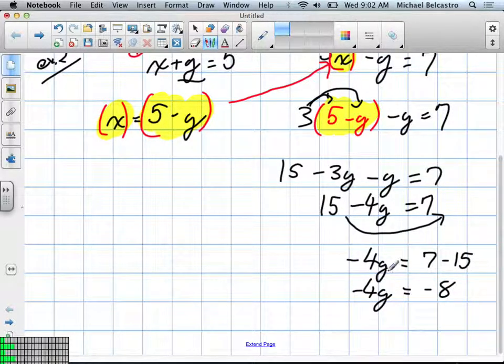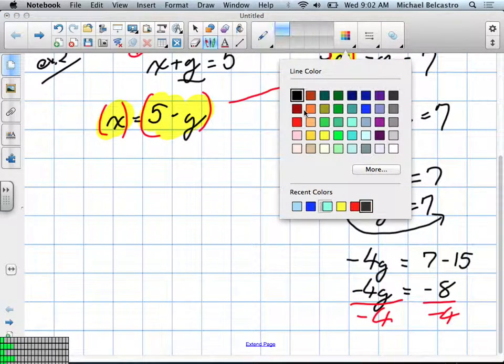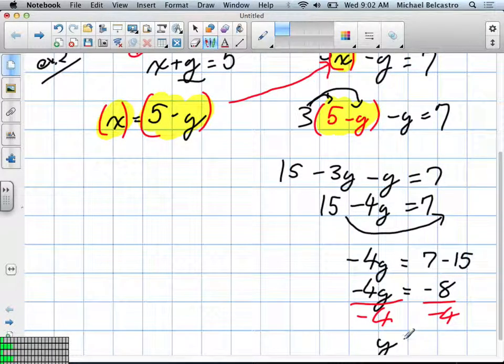Finally, our goal again is to isolate y. So I need to divide by negative 4 on each side. What is y going to equal in the end? y equals 2. We're not finished, though.